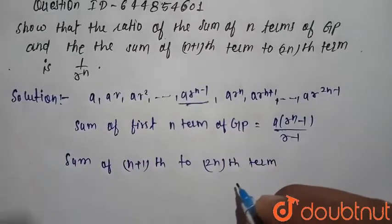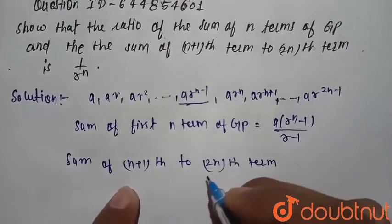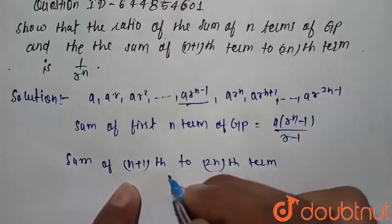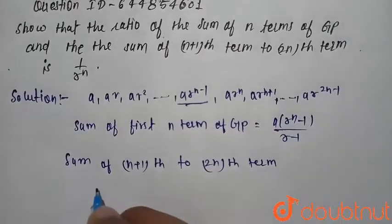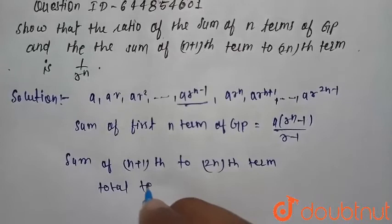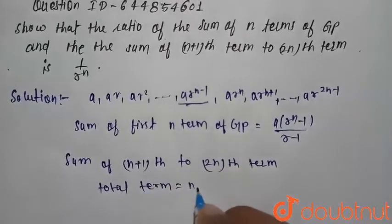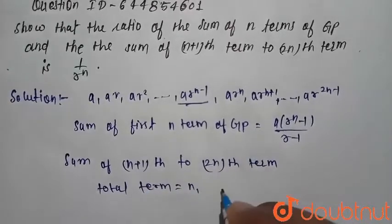So here is also 2n term and n plus 1 term, that is n terms. So total term is equal to n and common ratio is r.